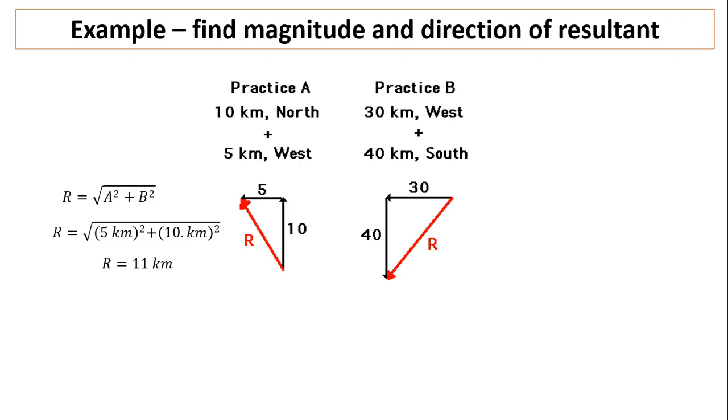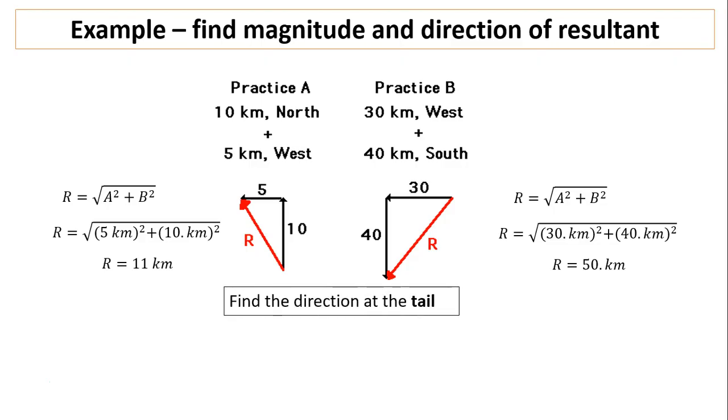Similarly for B, the two vectors are perpendicular to each other, so we can use Pythagorean theorem. You will have 50 kilometers. To find direction, we have to find the direction at the tail of the resultant. In this case, for A and B, it's this theta and theta.